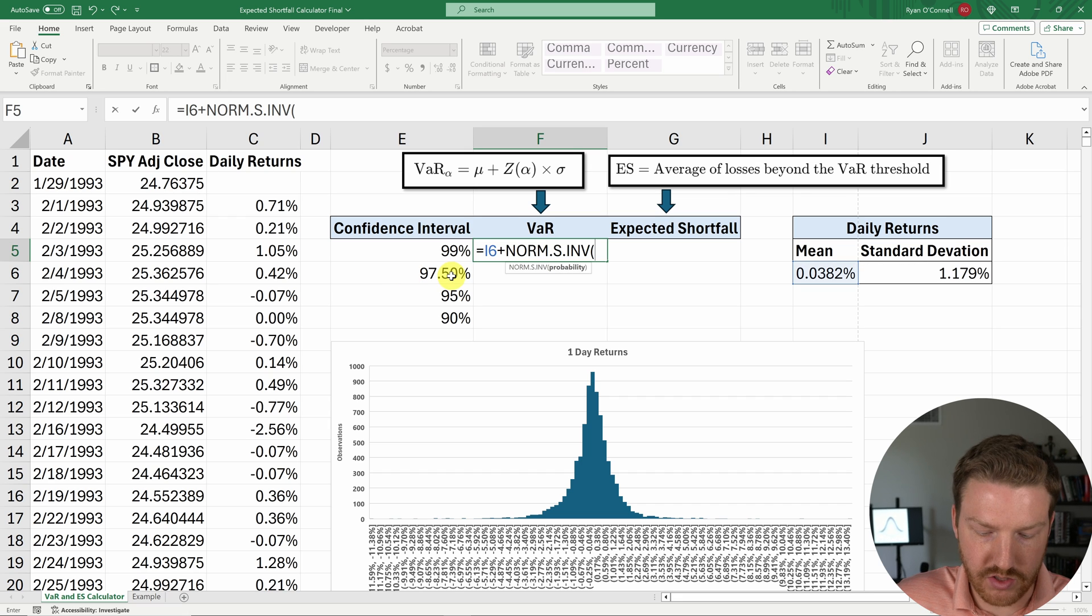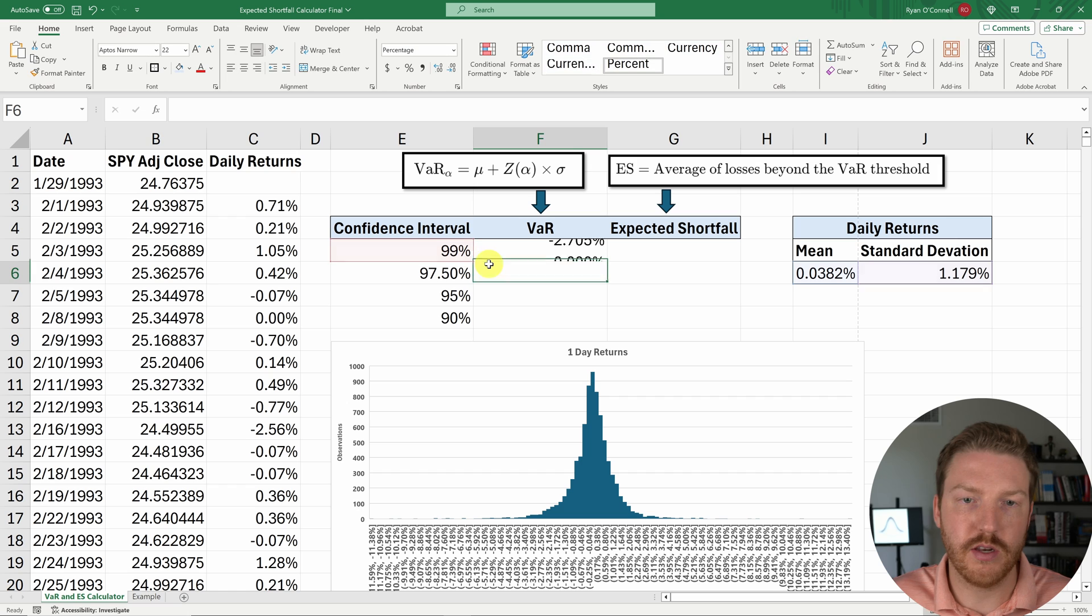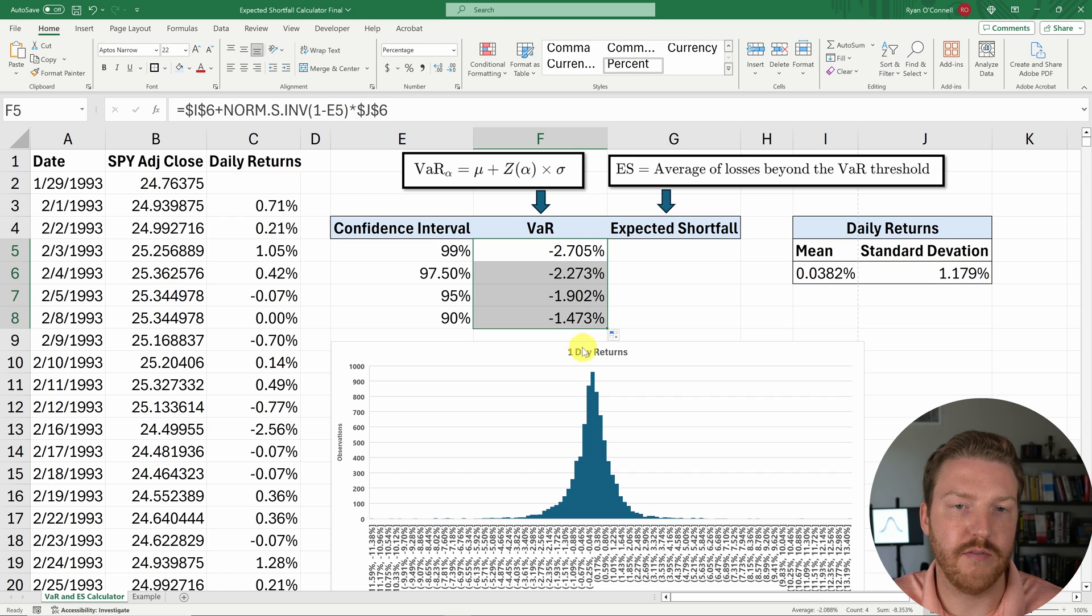And then the probability is going to be 1 minus this confidence interval. And then we have to multiply that Z score by the standard deviation. And I'm going to hit F4 to lock that in. And I also have to lock in the mean with F4 as well. And hit enter. We can drag this down to see the VaR for all the different confidence intervals.